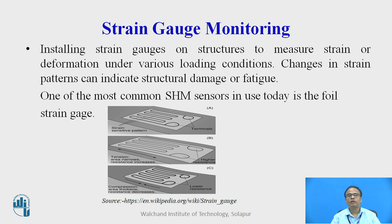Strain gauge monitoring. Installing strain gauges on structures to measure strain or deformation under various loading conditions. Changes in strain patterns can indicate structural damage or fatigue. One of the most common SHM sensors in use today is the foil strain gauge. This is a typical sketch of the sensor shown here for a structure subjected to tension or compression. Because of tension, the thickness of the strain gauge is reduced, and because of compression, the strain gauge becomes thicker compared to when the member is subjected to tension.